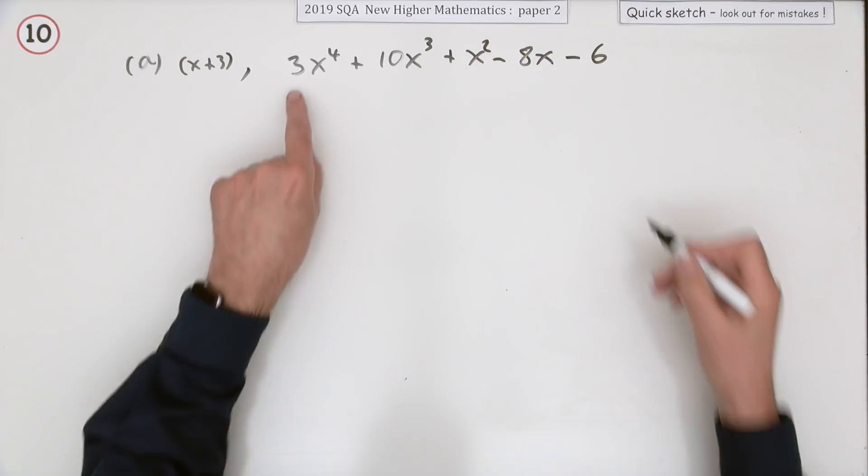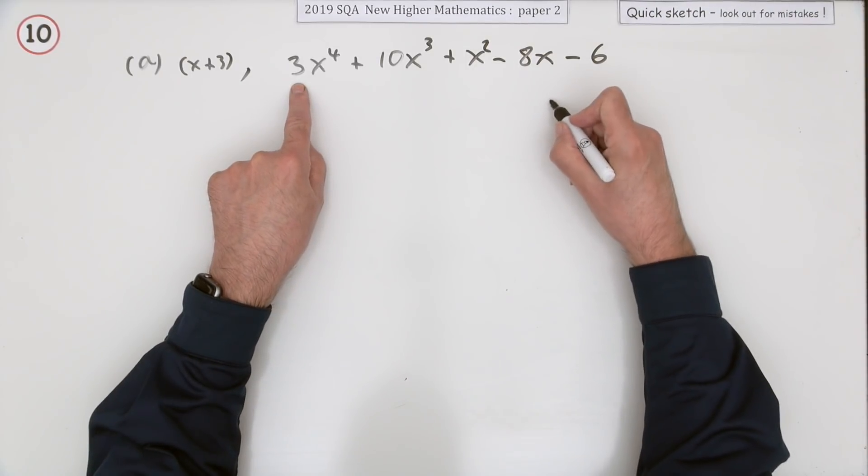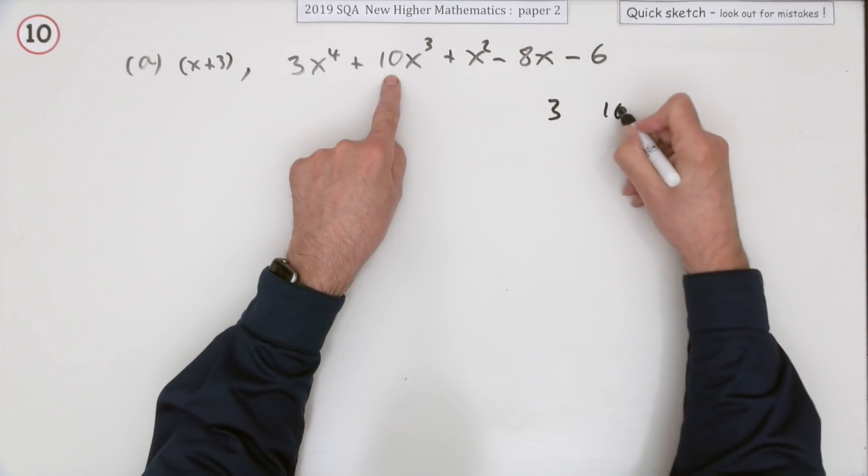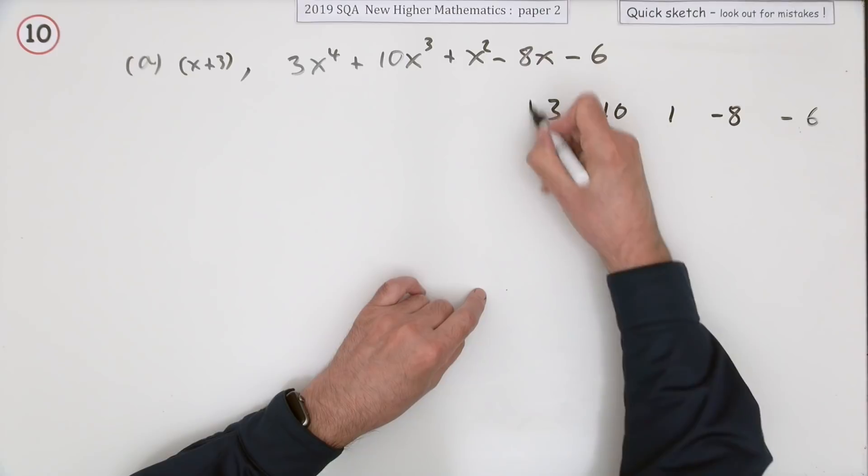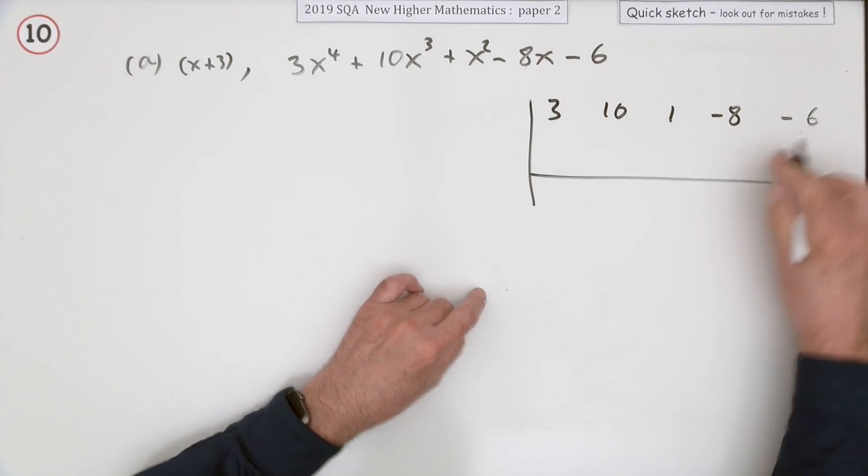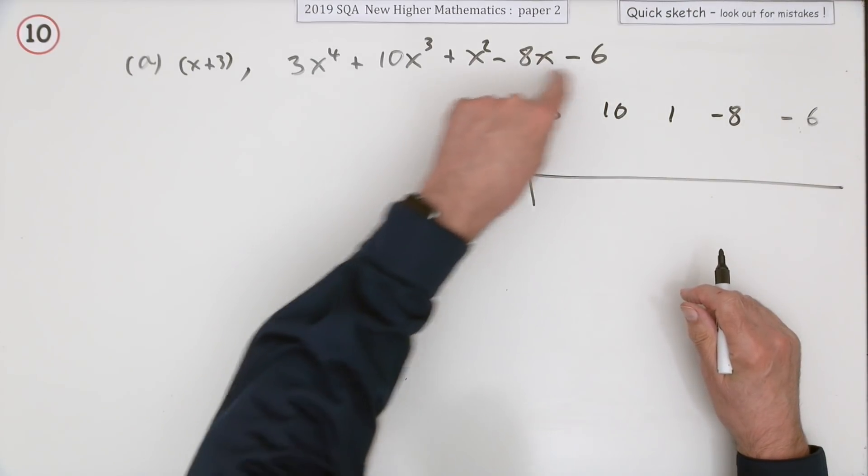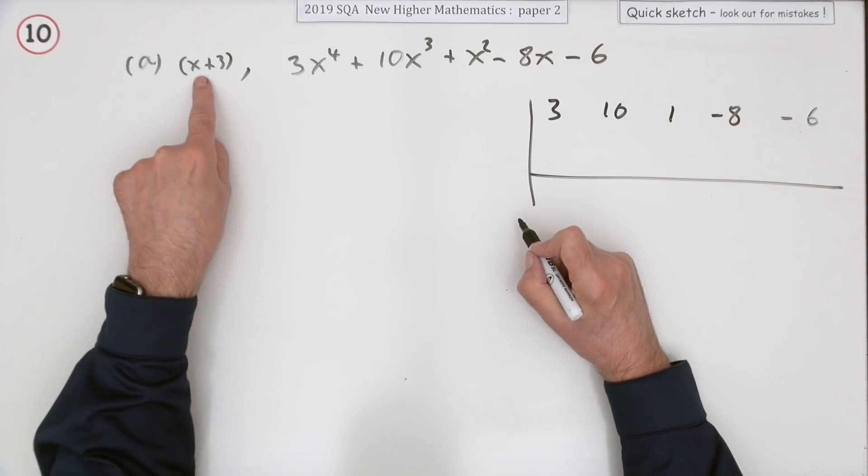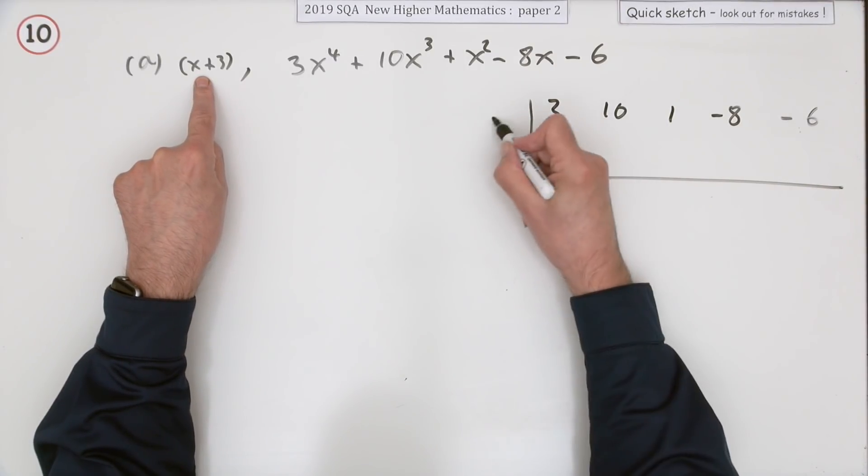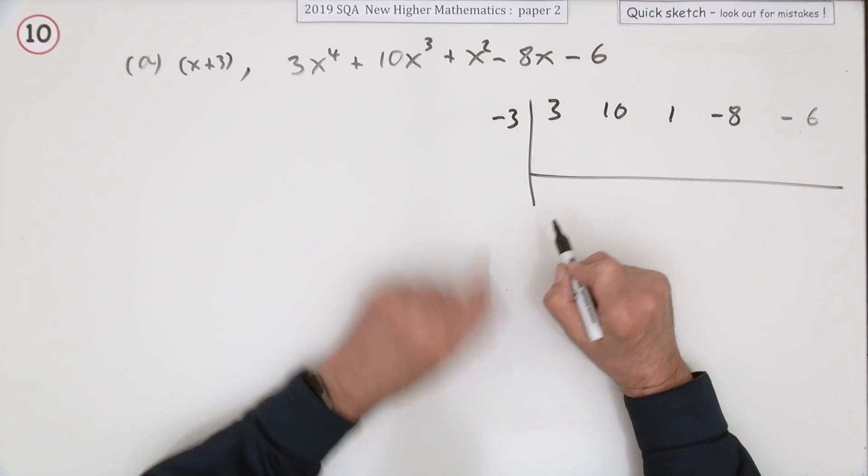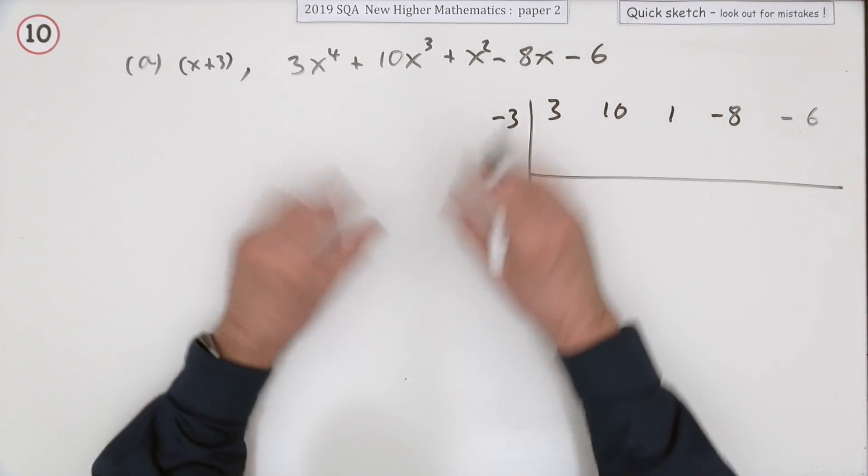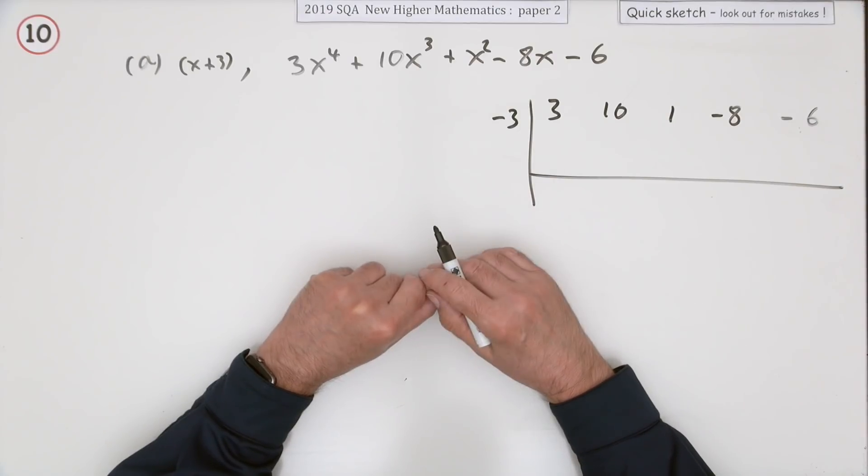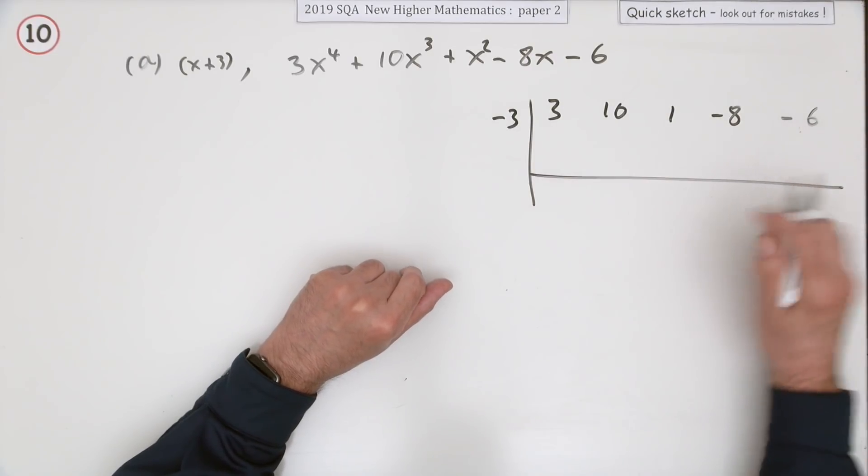So synthetic division: the coefficients would be 3, 10, 1, -8, -6. They're all there for powers 4, 3, 2, 1, 0. Now if x+3 is a factor, that means negative 3 should be a zero. If you put -3 into this, the answer should come to zero. You can do it that way, but it's a bit of a waste of time because it wouldn't lead any further. This is handy because it will give you the zero and also tell you the remaining factor, the remaining cubic factor in this case.